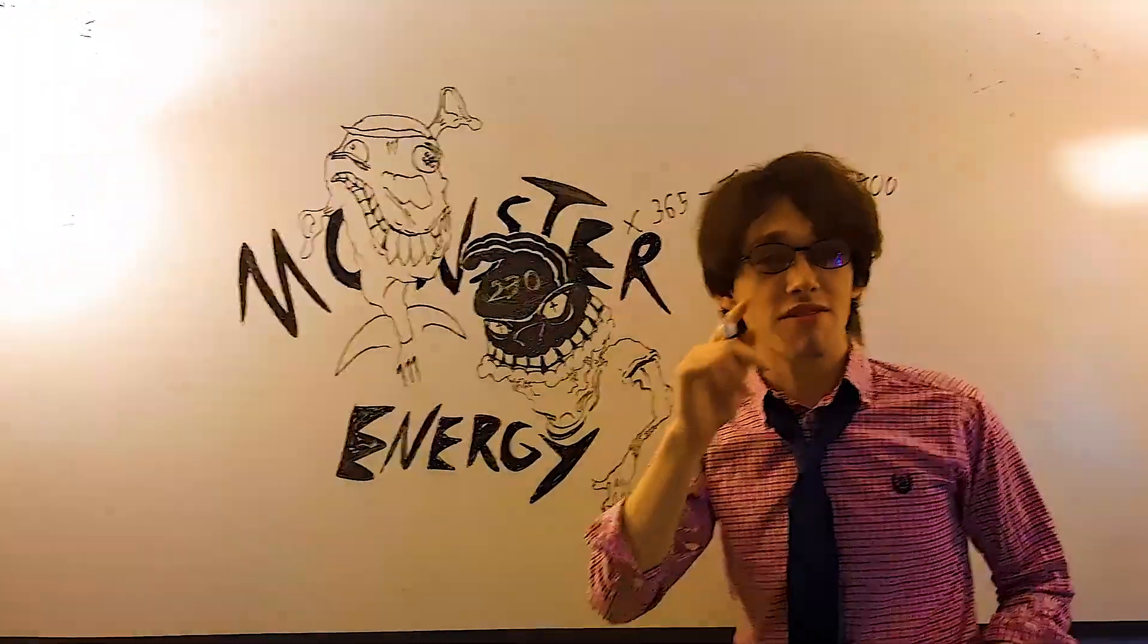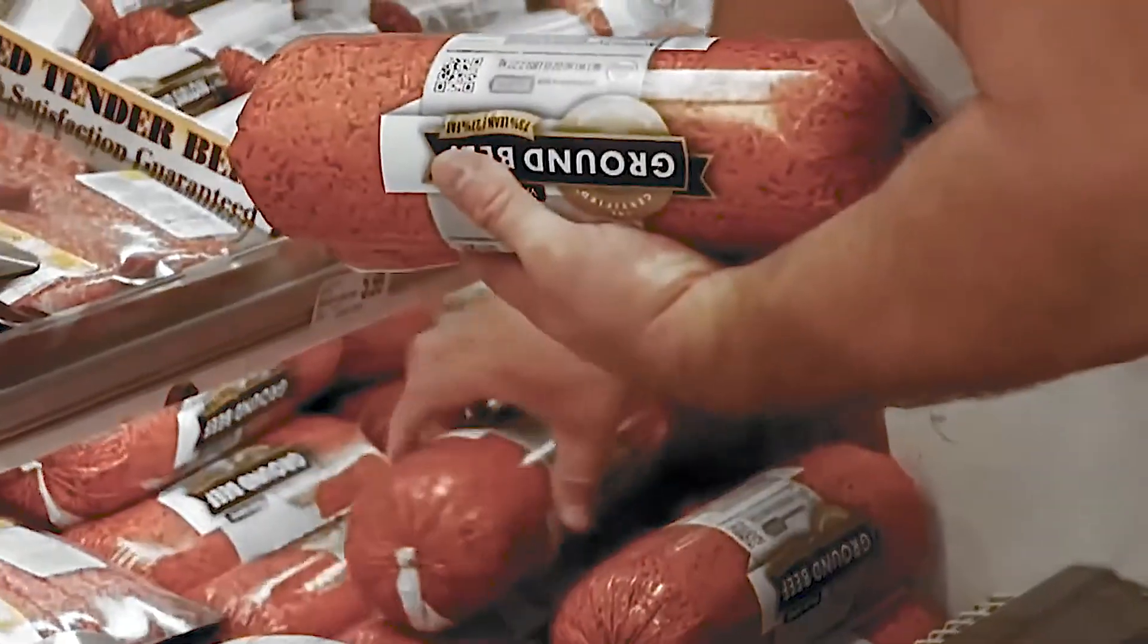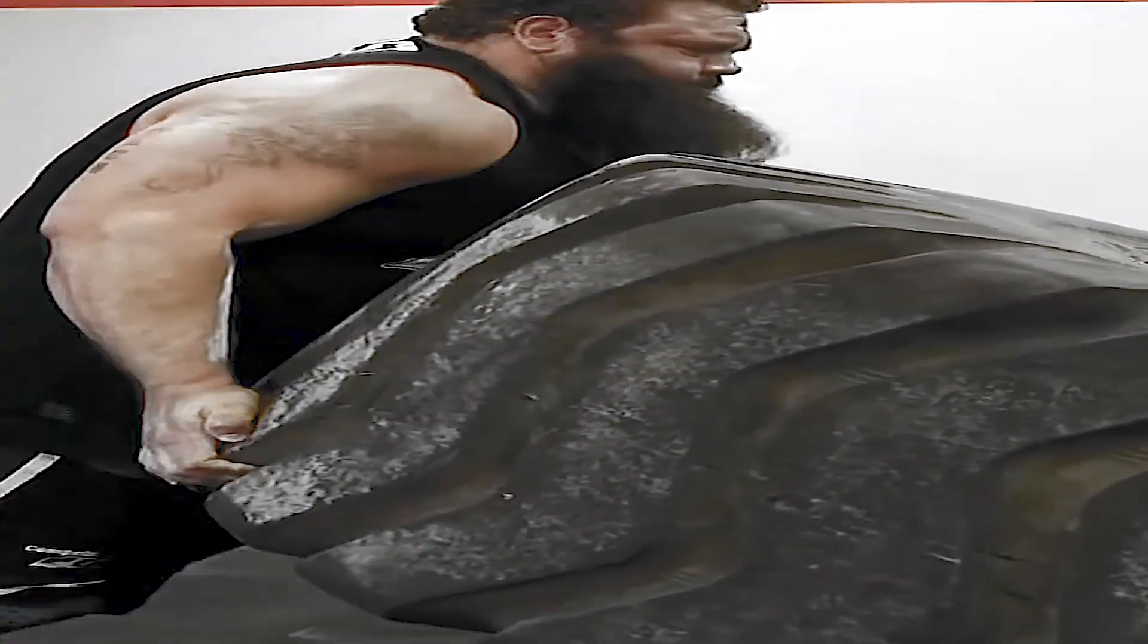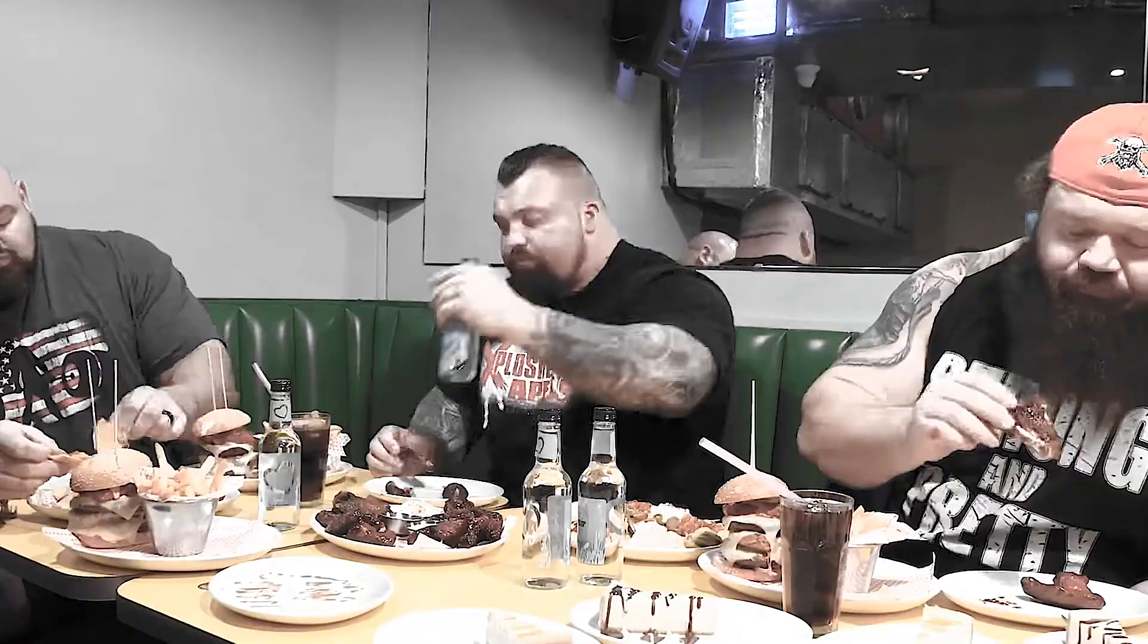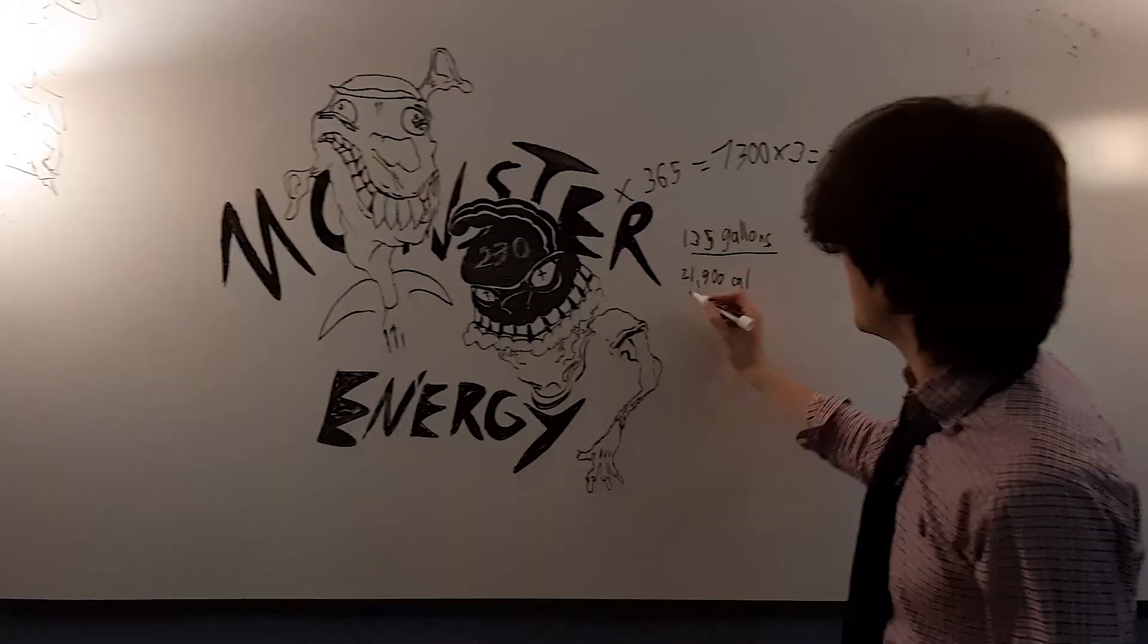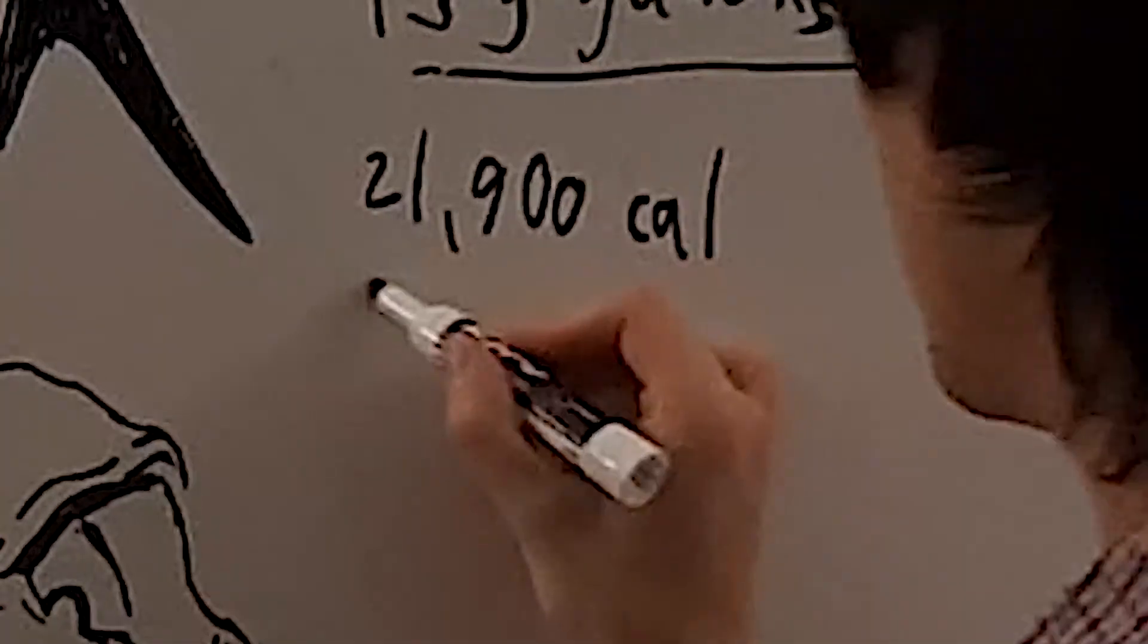That's a lot of calories. But there are videos online of people eating 20,000 calories a day. Like, there's that big chonk guy, the big buff chonk man, eating 20,000 calories a day. 135 gallons, 21,900 calories.